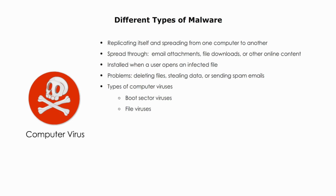File viruses infect executable files. When a user runs the infected file, the virus will load it into memory and execute it. Macro viruses infect files that contain macros, which are small programs that can be run within a program, such as Microsoft Excel macros.